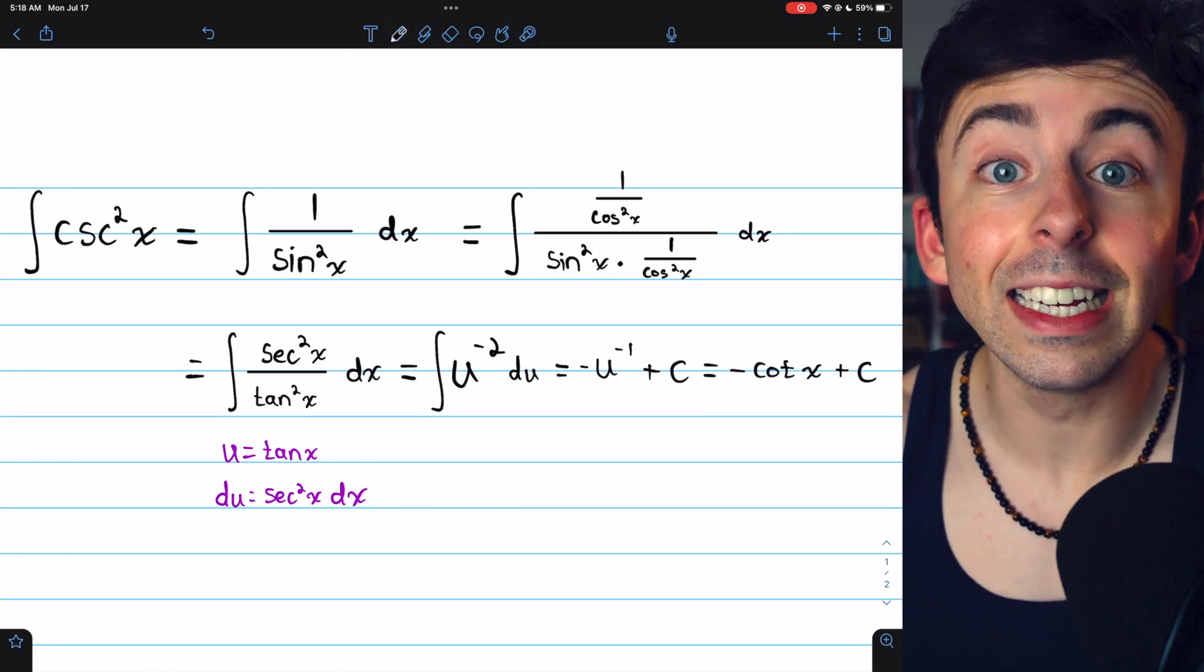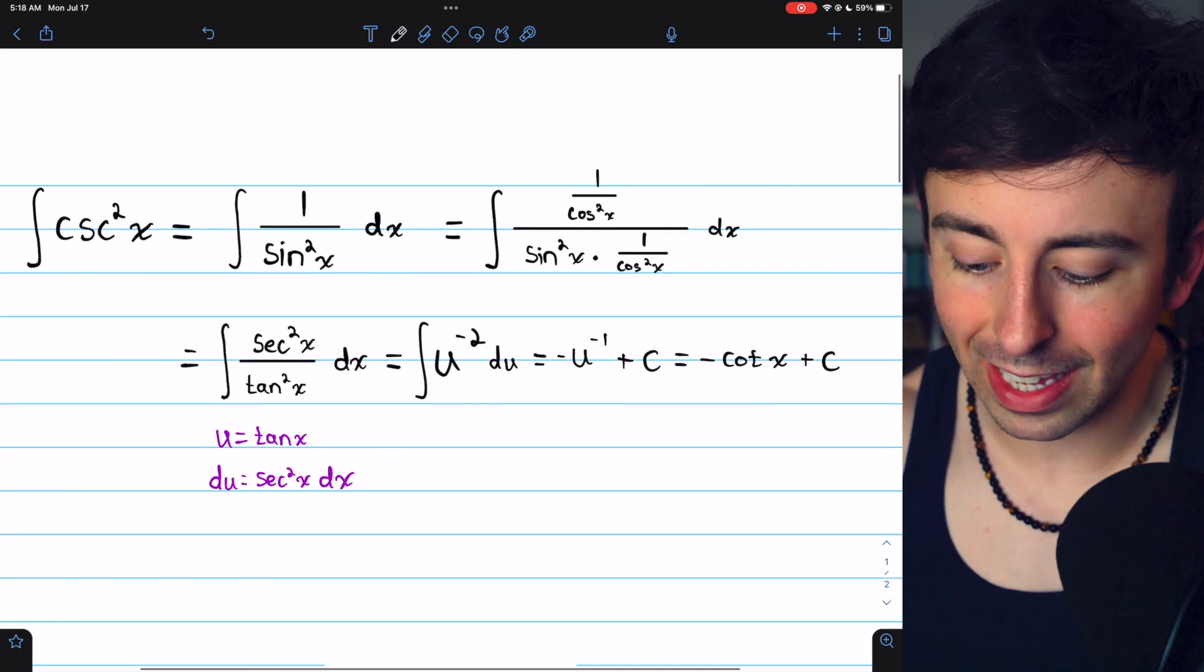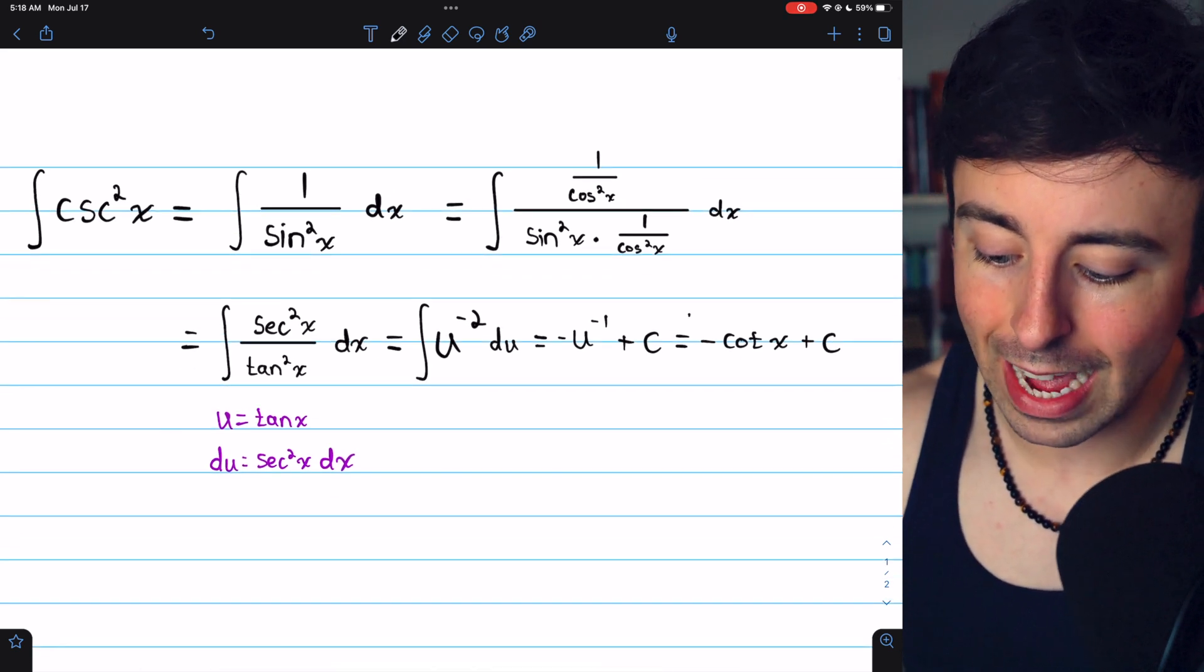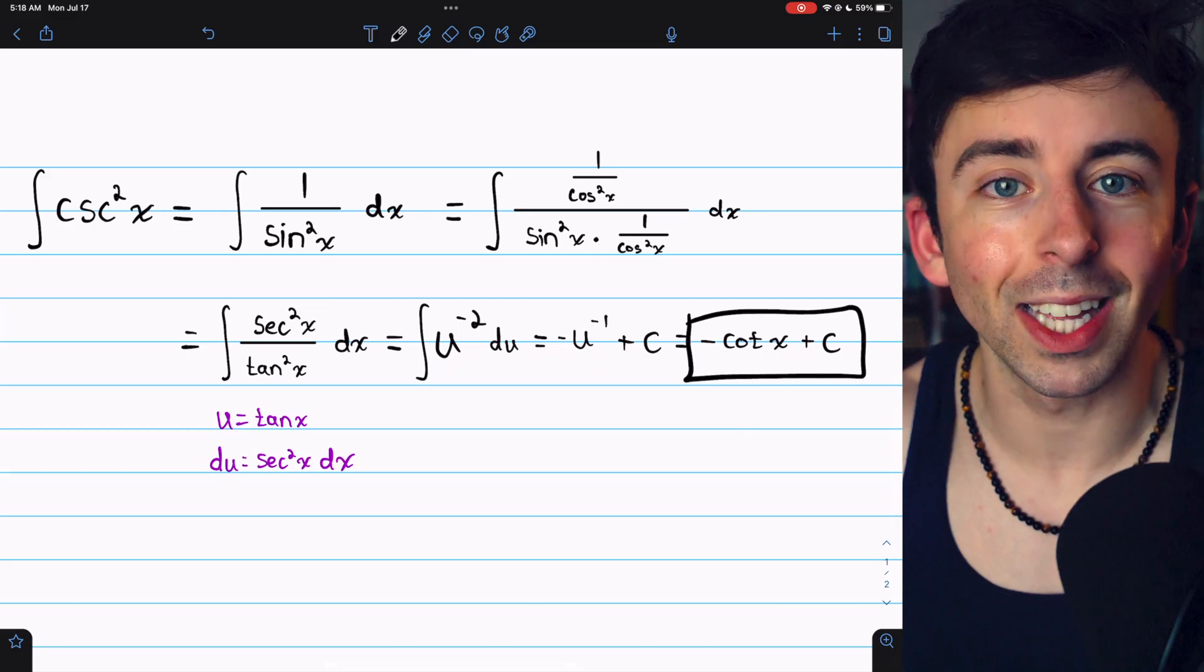u to the negative 1 is cotangent then, and that gives us our final answer, negative cotangent x plus c.